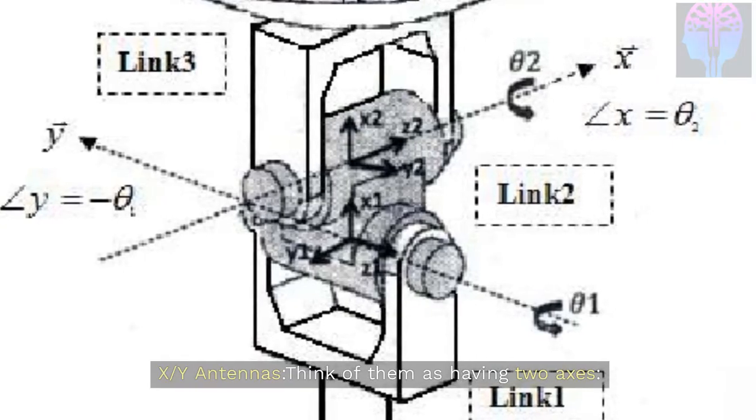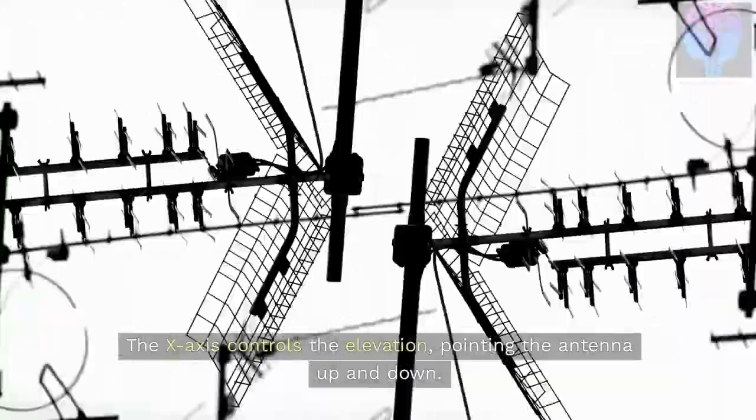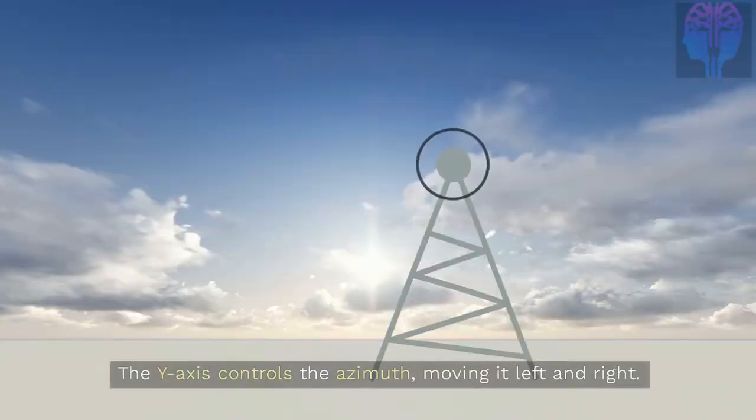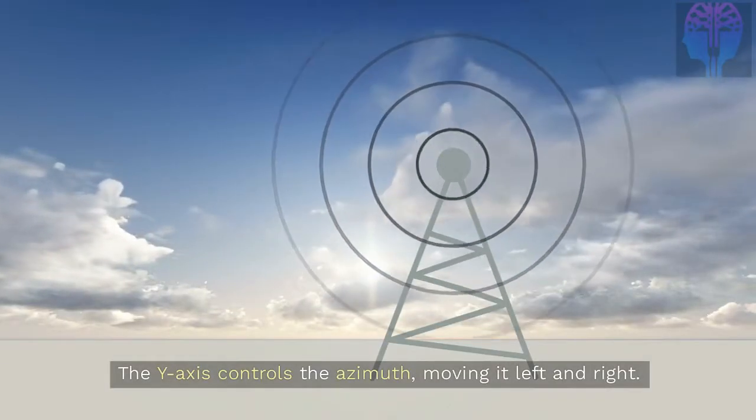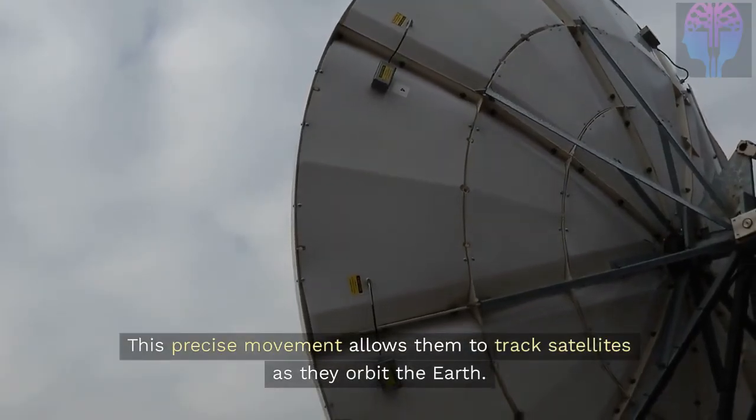XY antennas think of them as having two axes. The X-axis controls the elevation, pointing the antenna up and down. The Y-axis controls the azimuth, moving it left and right. This precise movement allows them to track satellites as they orbit the Earth.